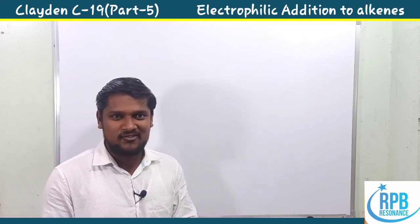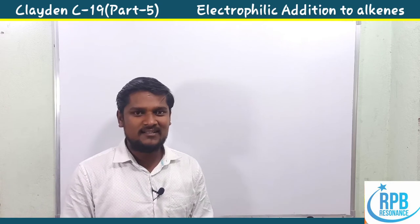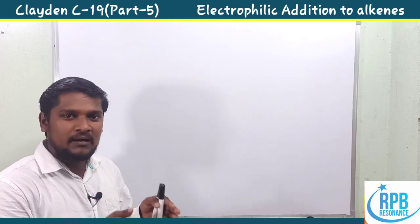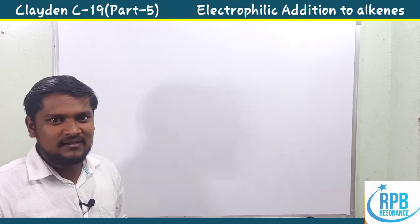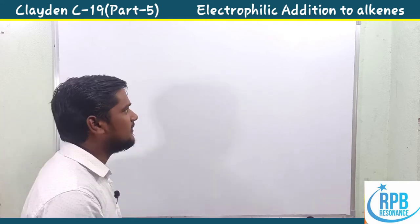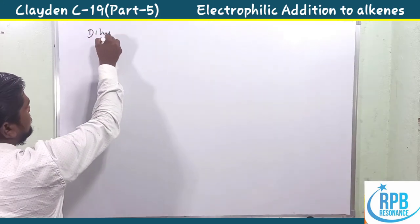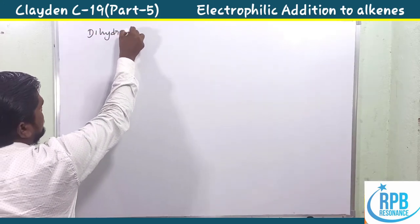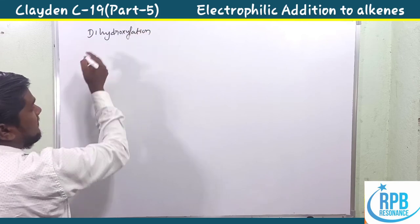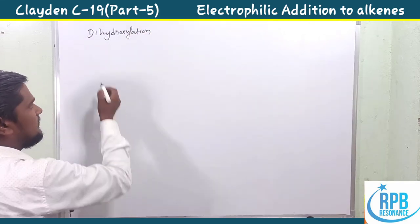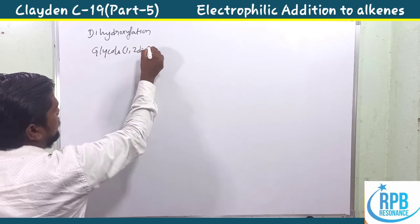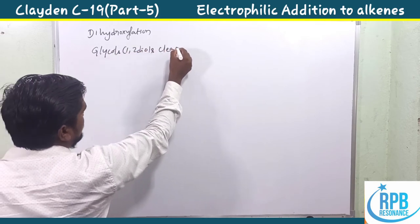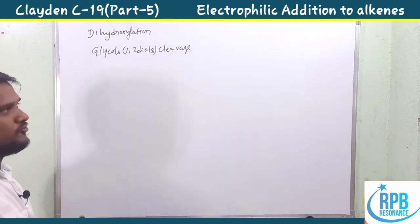Hi everyone, welcome to RPB Resonance Chemistry. Let's continue our lectures on organic chemistry series. Today I'm going to discuss part 5 in chapter 19, which is electrophilic addition on alkenes. In this class we are discussing two things: dihydroxylation, followed by glycols cleavage, or 1,2-diols cleavage.